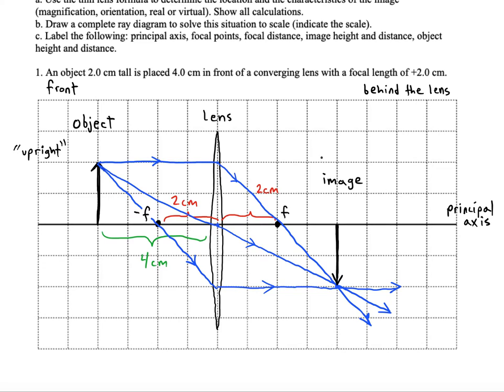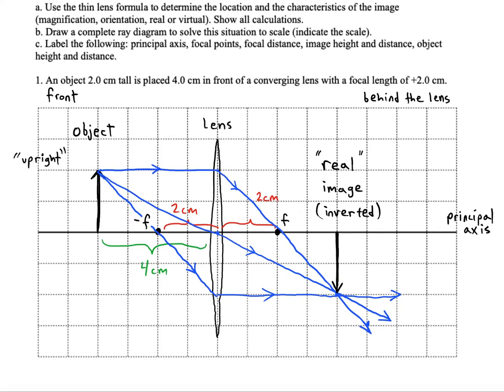So this is actually going to be called a real image. The reason why it's real is because the light beams really do pass through that point. We'll see cases in the future where the light beams just appear to come from a certain location. That's called a virtual image. This is a real image. Now this image will be called also inverted as opposed to upright because it's upside down. Alright. So that's the construction.